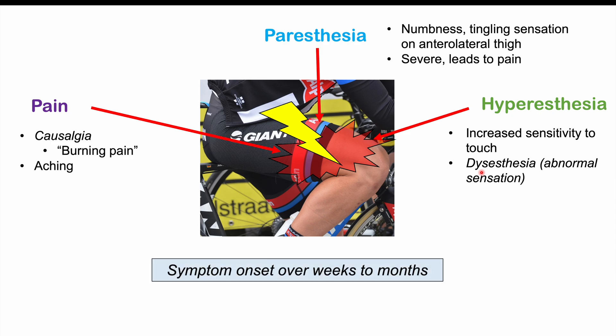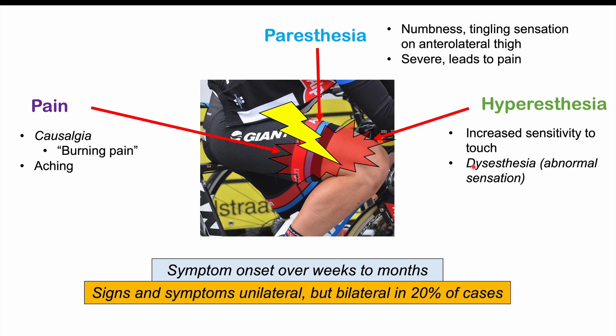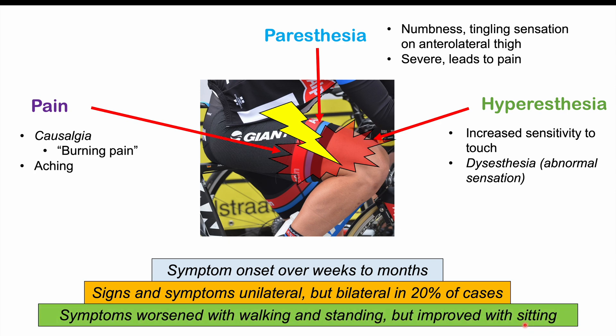The symptoms of this condition can occur over weeks to months. Signs and symptoms are generally unilateral, meaning they occur on one thigh, but in some cases can be bilateral — both thighs affected — which occurs in approximately 20% of cases. Generally speaking, symptoms are worsened with walking and standing but improved with sitting, though certain sitting positions that compress the lateral femoral cutaneous nerve may actually worsen symptoms.